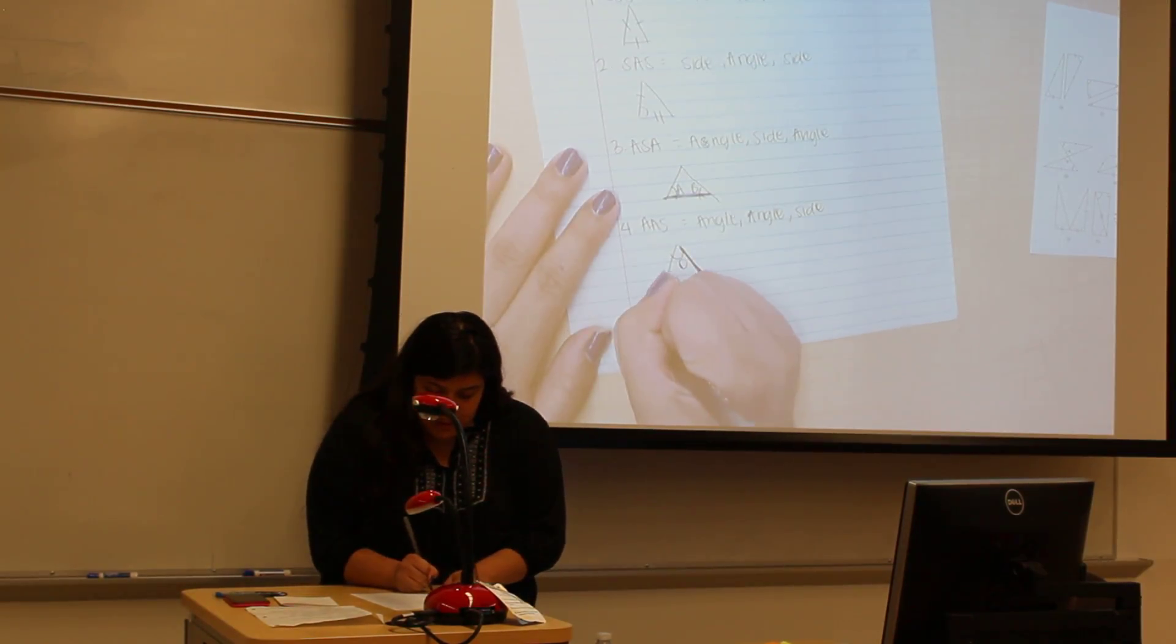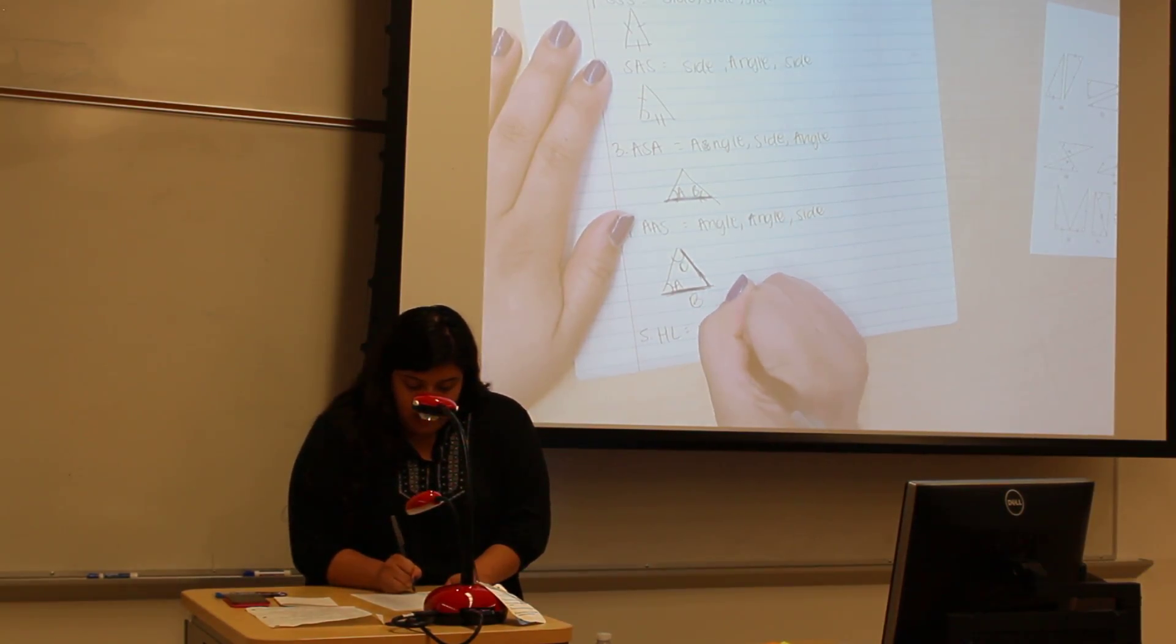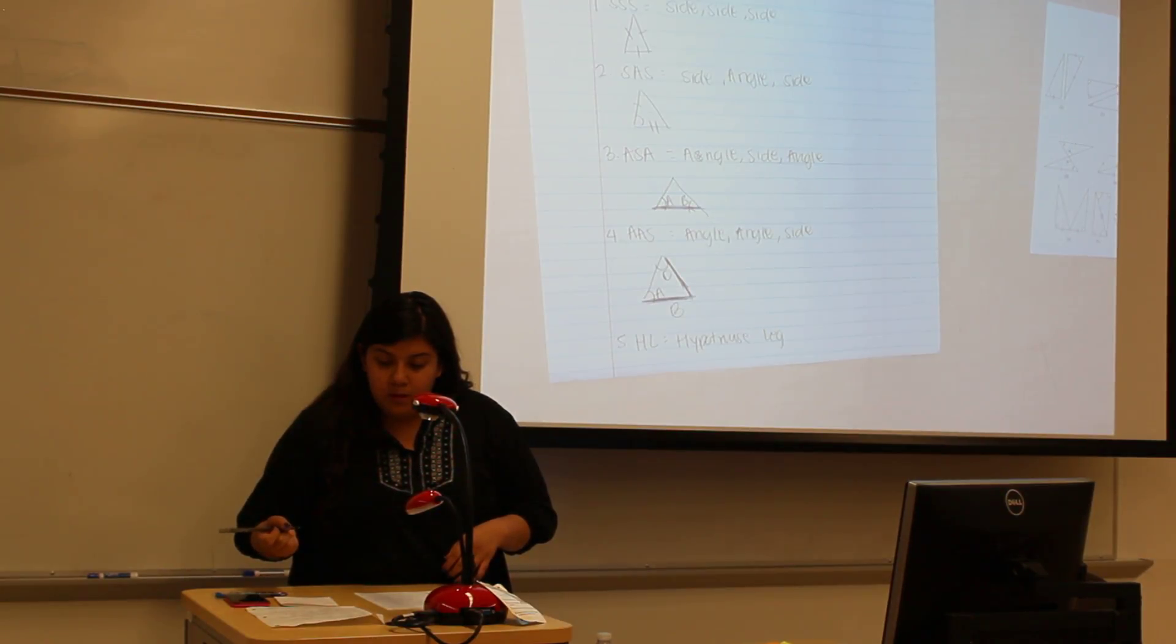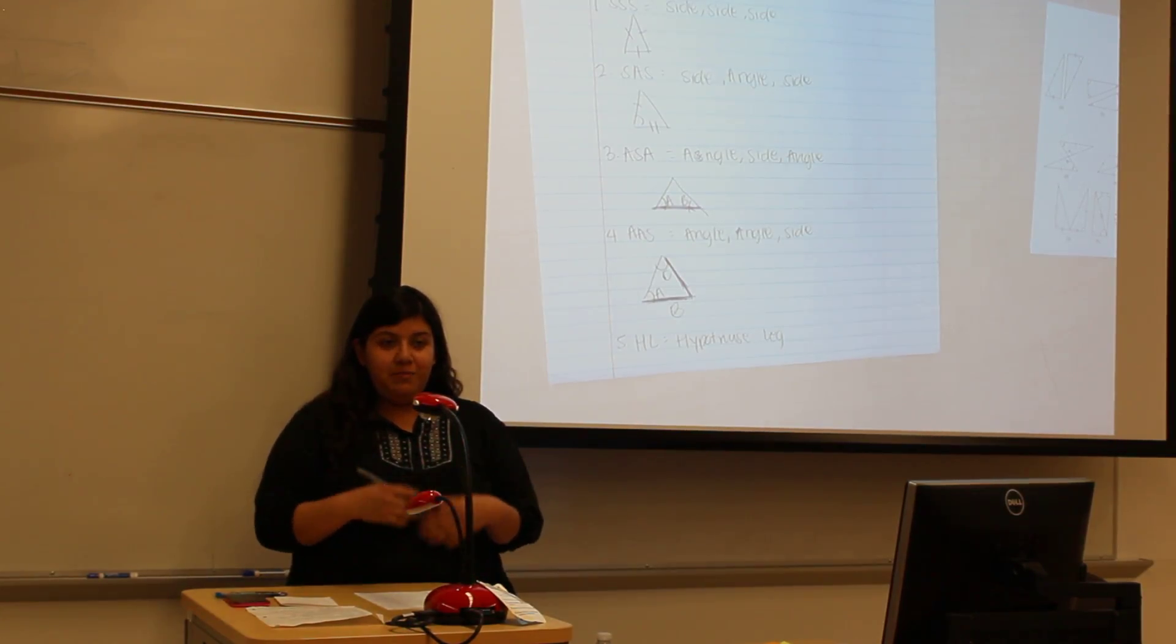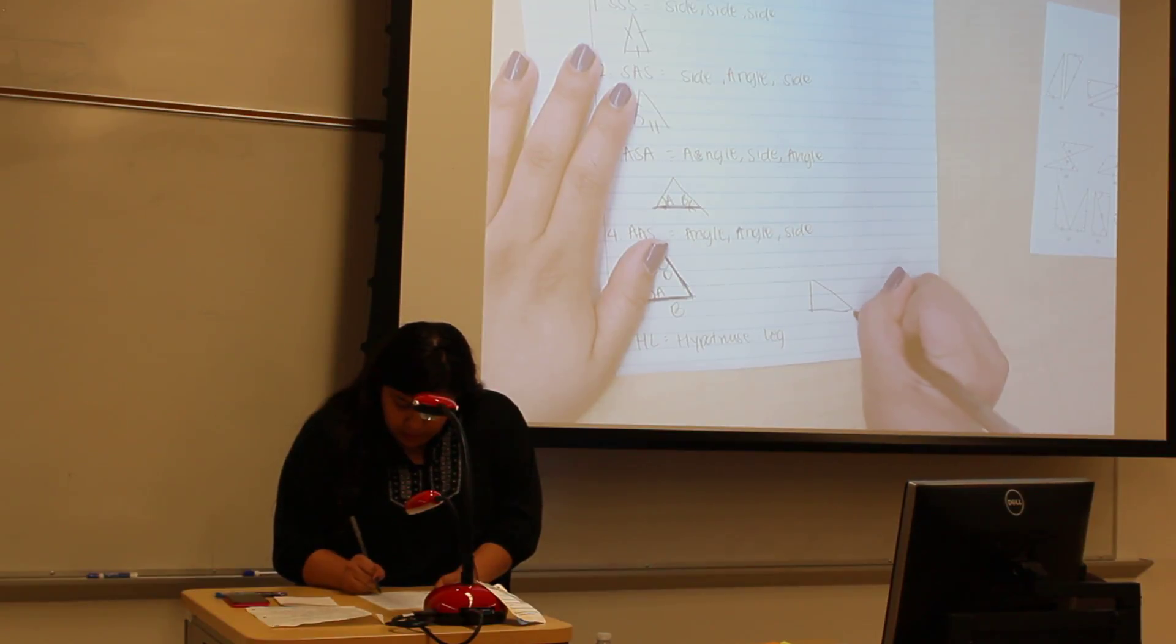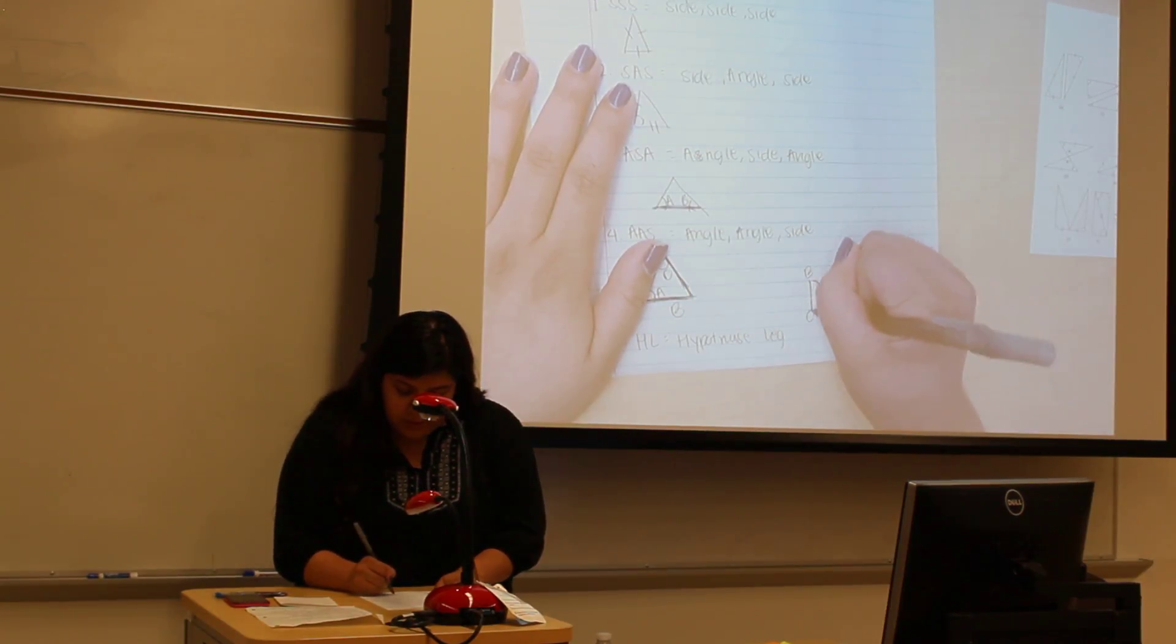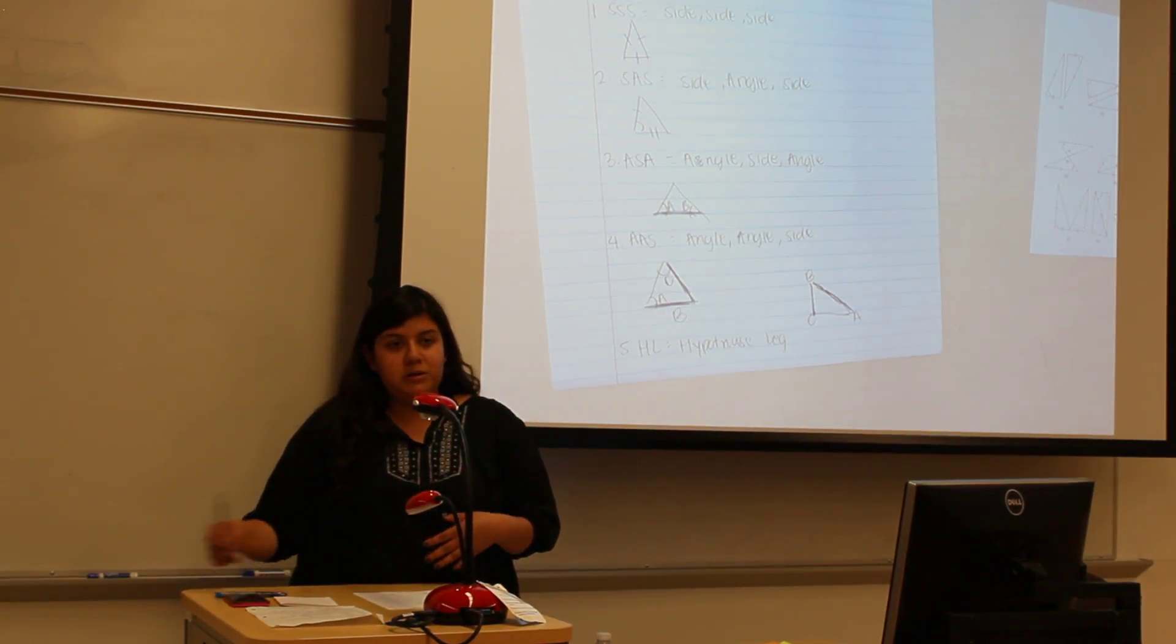The fifth one is HL, which is hypotenuse-leg. For this one, the length of the hypotenuse and one of the legs are going to be corresponding. So the hypotenuse and one of the legs are going to be congruent to the other triangle with their hypotenuse and the other leg.